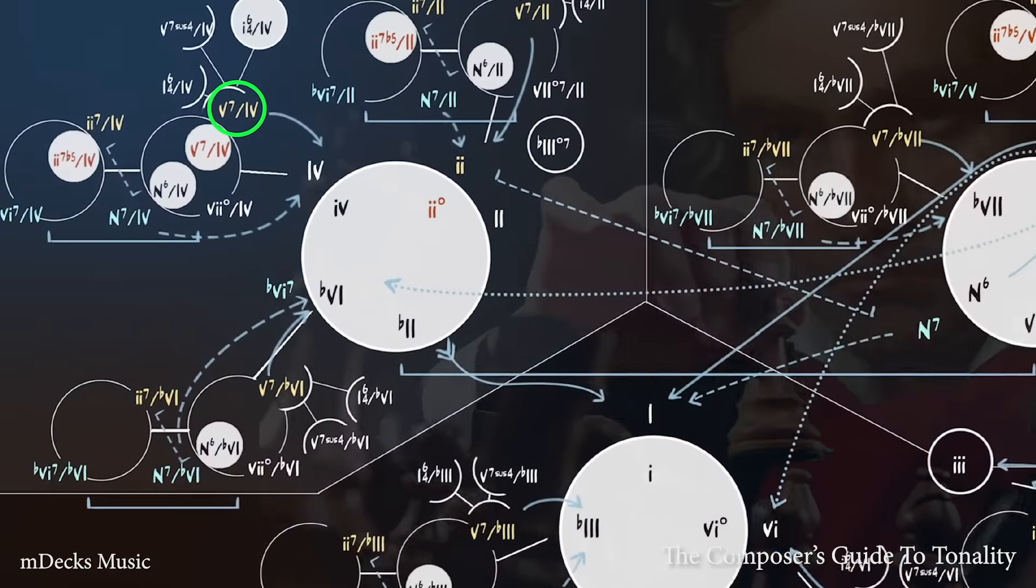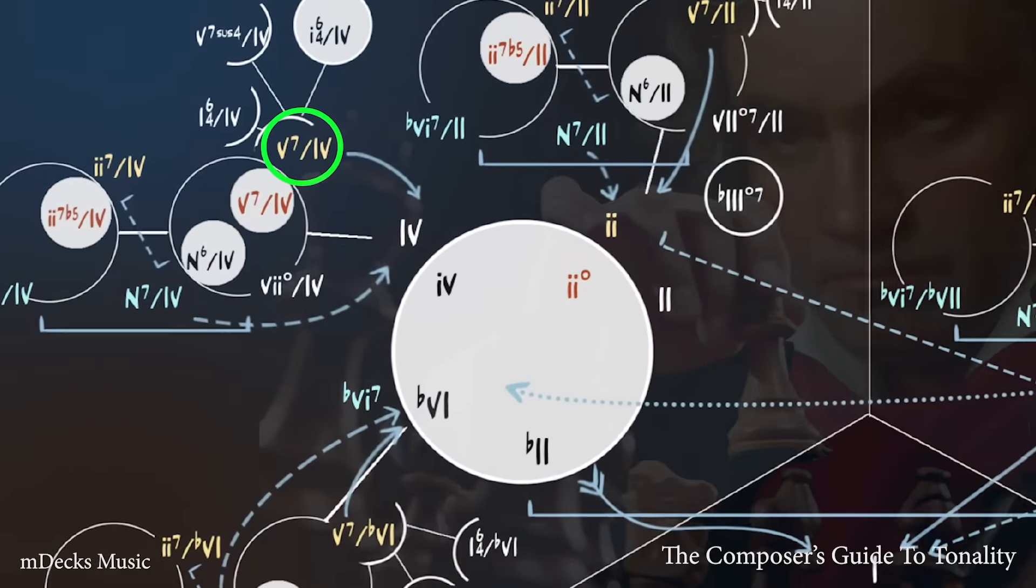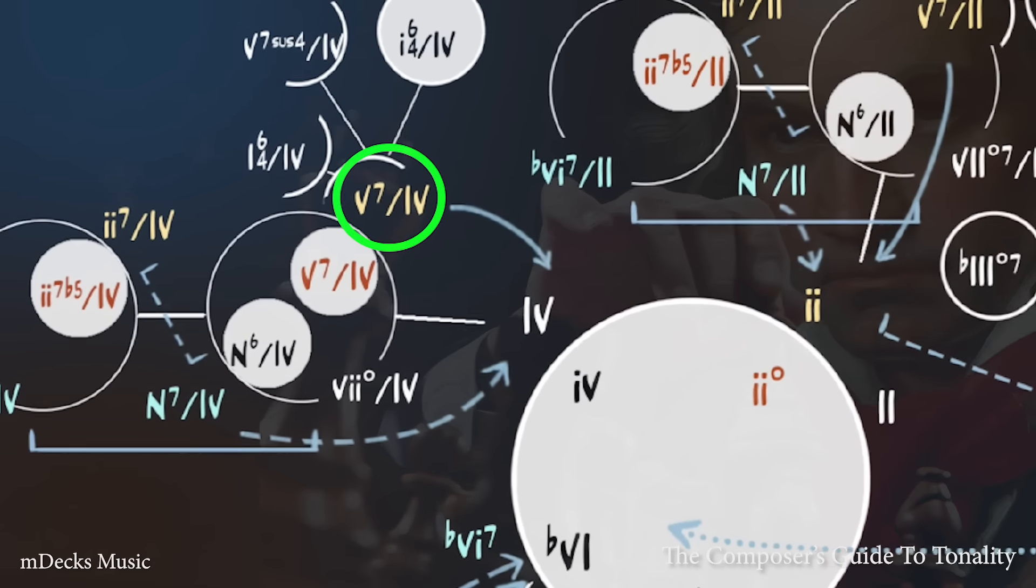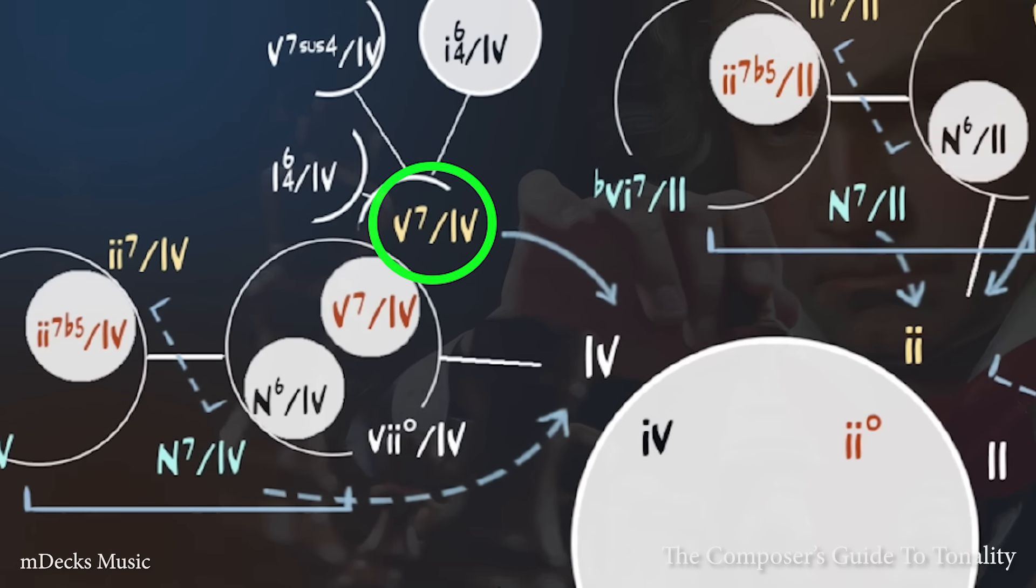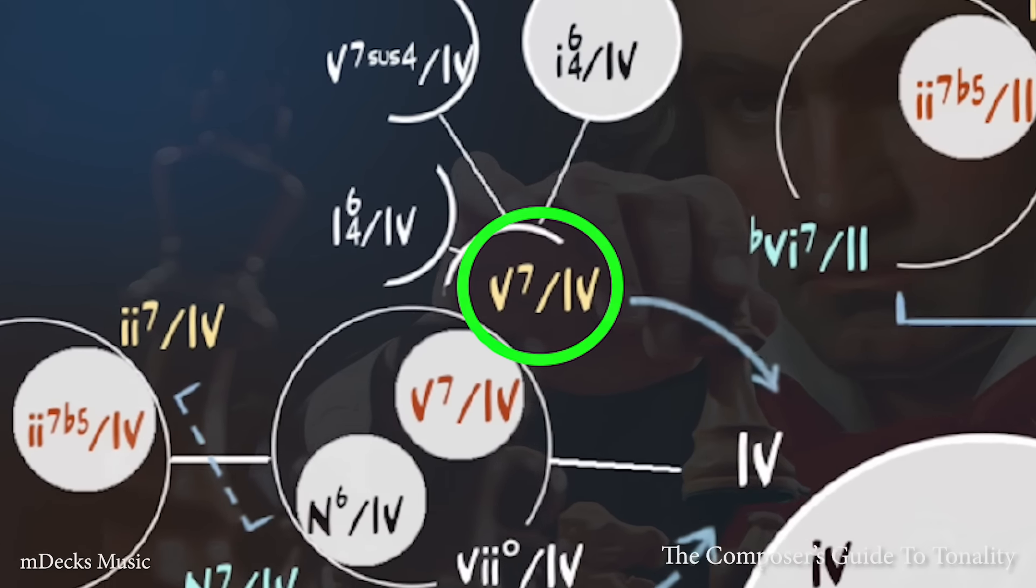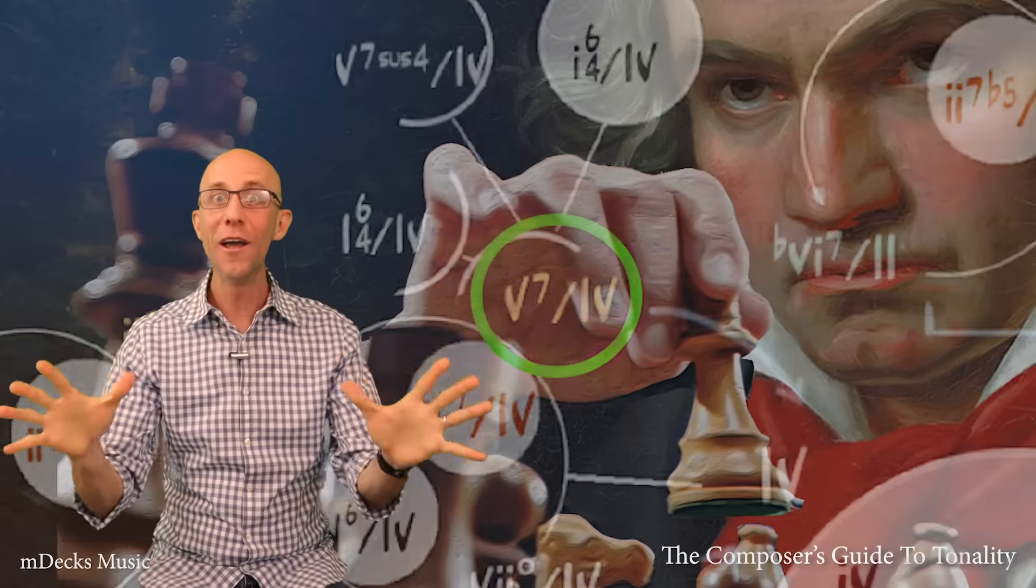So, 5-7 of 4 to 4. A 5-7, a 7th chord, not a triad. A dominant chord, not a tonic. A dominant chord in the subdominant region, not in the dominant region. What an opening.